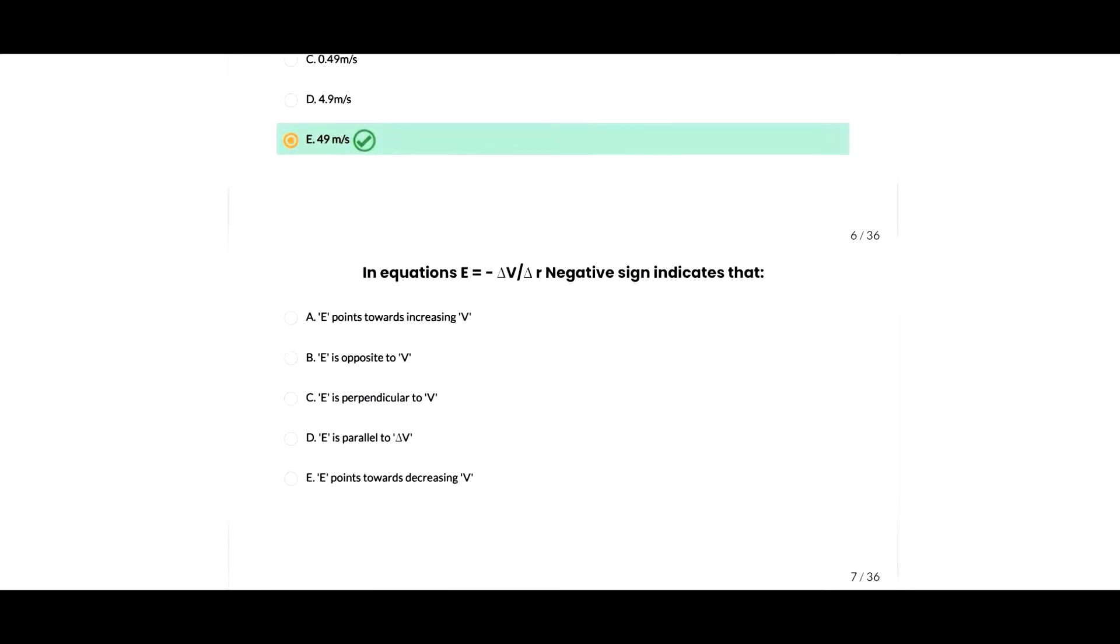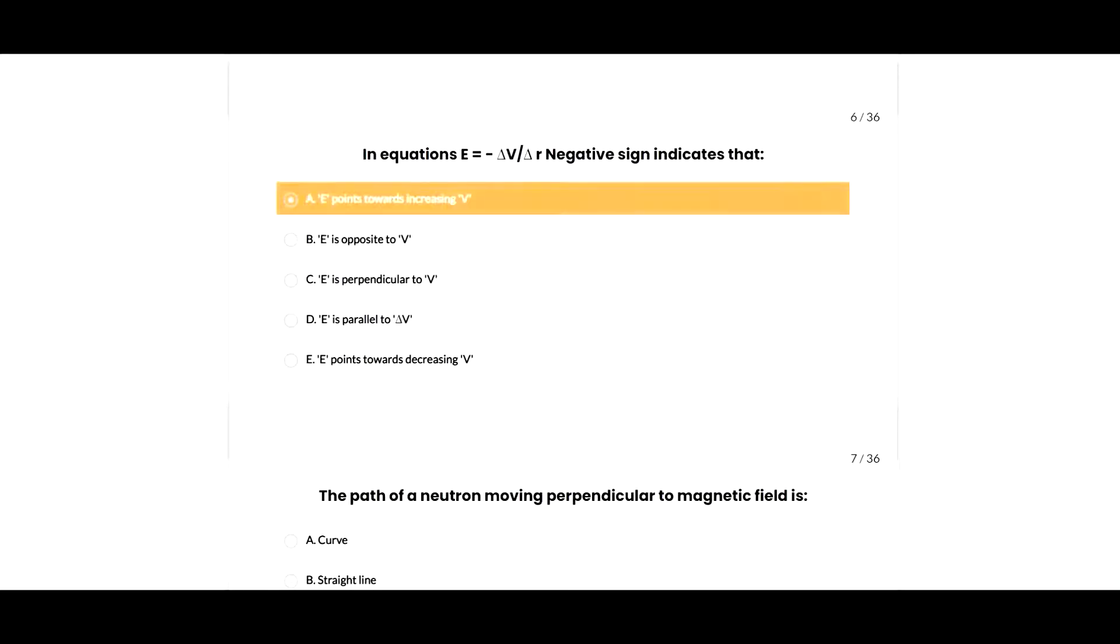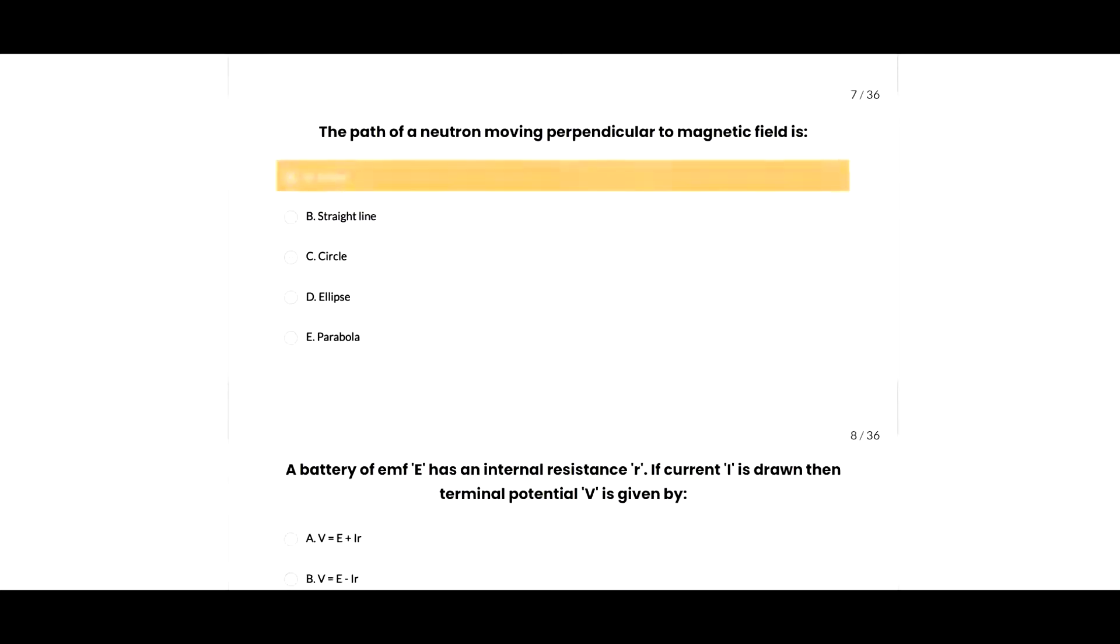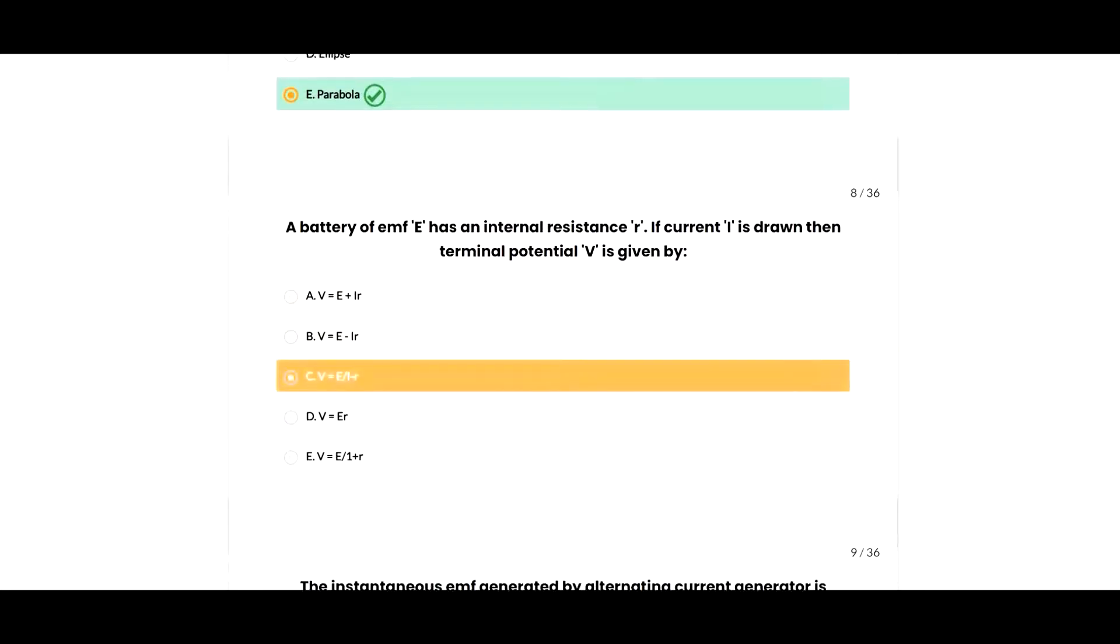Next question: in the equation E equals minus delta V over delta R, the negative sign indicates that E is opposite to B, so B option is correct. Next question: the path of a neutron moving perpendicular to a magnetic field will be given as a parabola, so E option is correct.